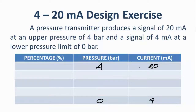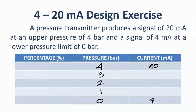We divide the range into 5 points. For pressure from 0 to 4 bar, the midpoint is 2, then 1 in between 0 and 2, and 3 in between 2 and 4 — giving us 0, 1, 2, 3, and 4 bar. For the current range of 4 to 20 mA, the midpoint is 12, then 8 between 4 and 12, and 16 between 12 and 20 — giving us 4, 8, 12, 16, and 20 mA.